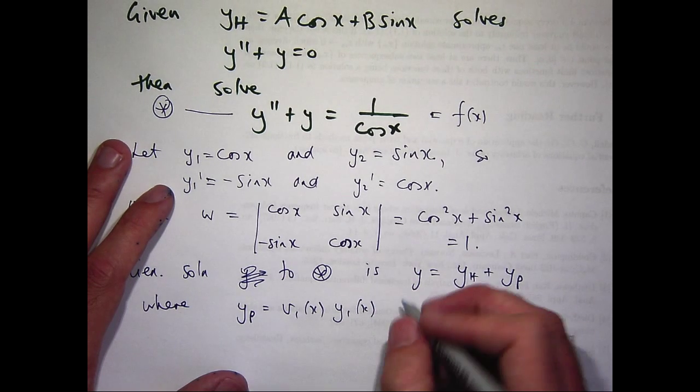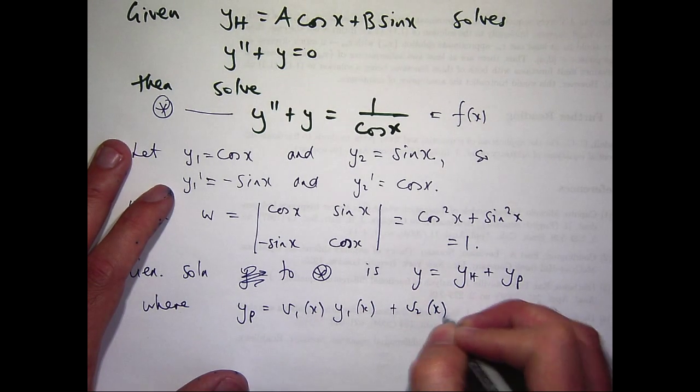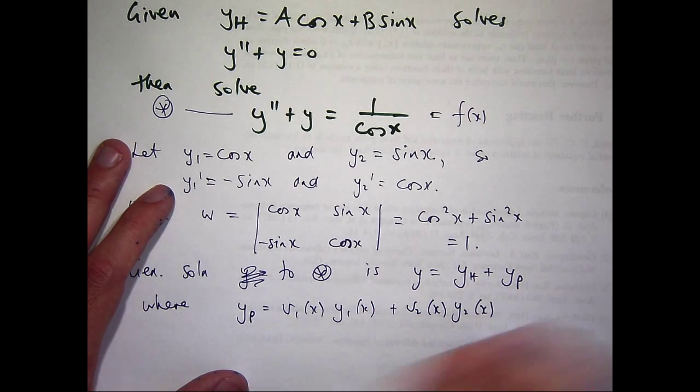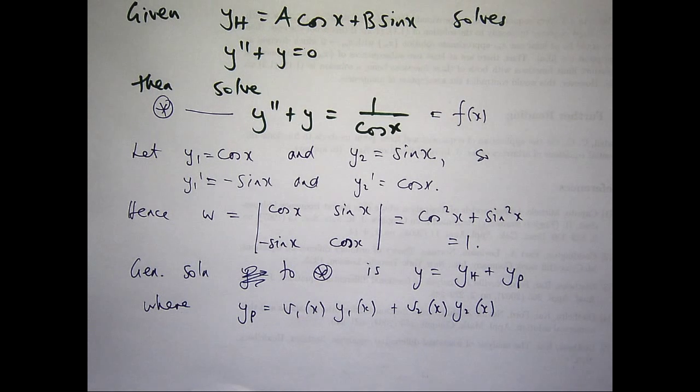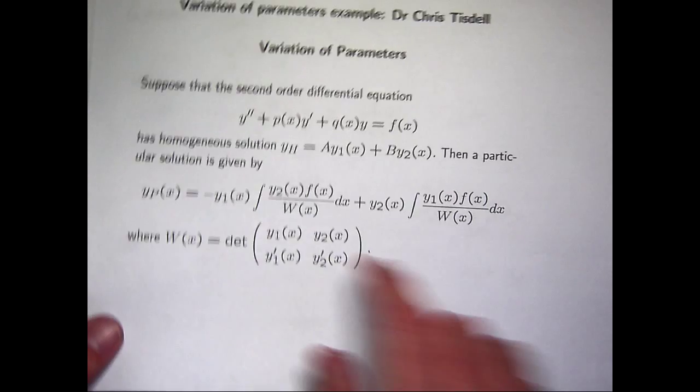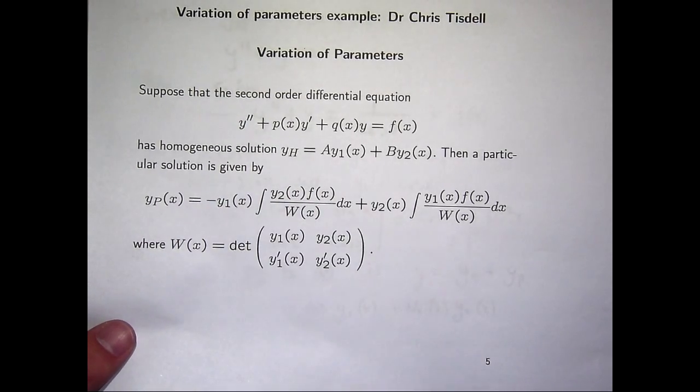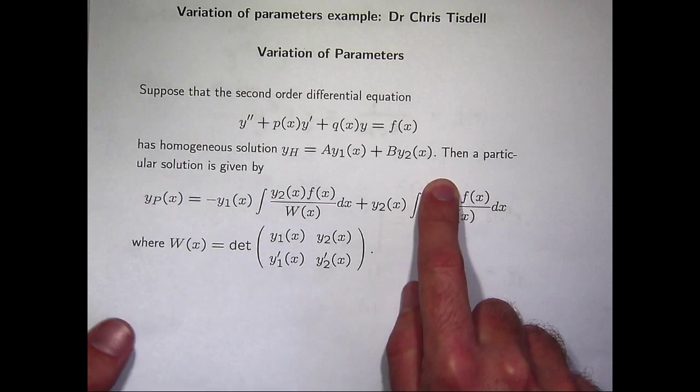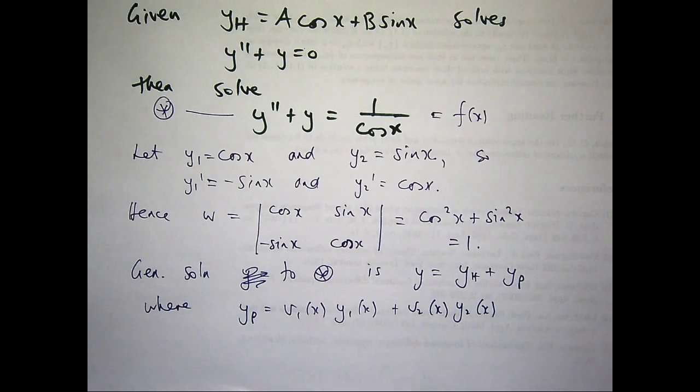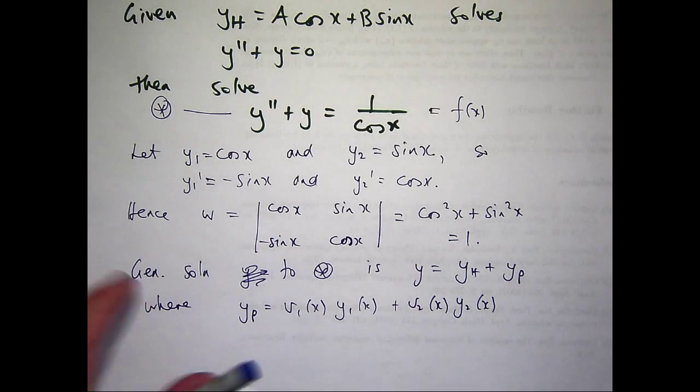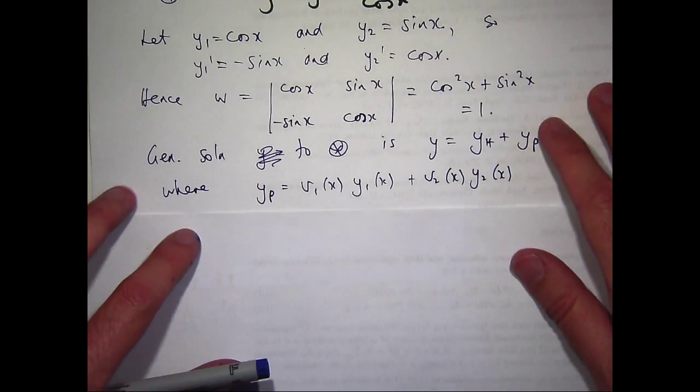And we build the particular solution from my homogeneous solution, y sub 1 and y sub 2. Now the v1 and v2 here are functions that we want to determine. V1 will be minus that integral. V2 will be that integral. So what we're going to do is just calculate what v1 and v2 are.